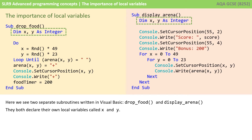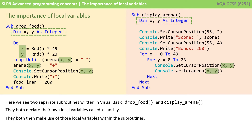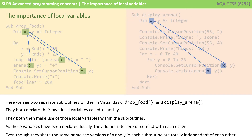We can see that both subroutines declare their own local variables X and Y. We can then see they both make use of those local variables within the subroutines. The really important thing to note here is that as these variables have been declared locally — in other words, within their own subroutines — they do not interfere or conflict with each other.